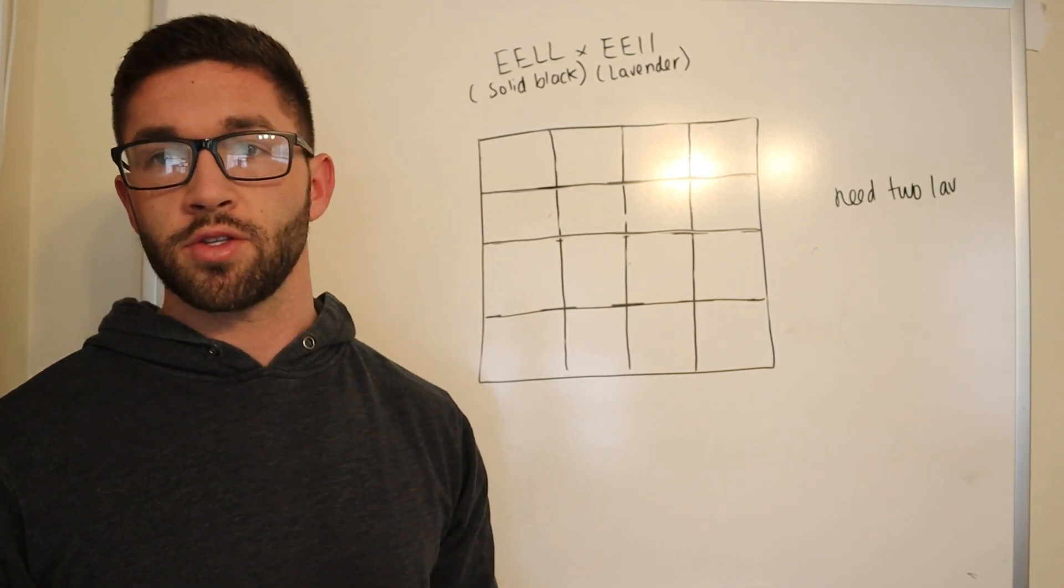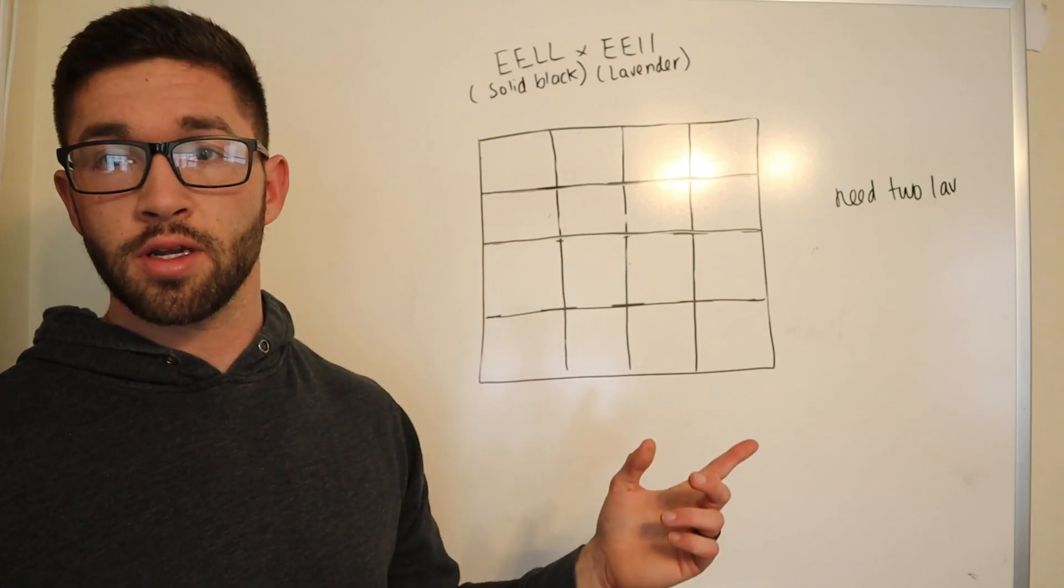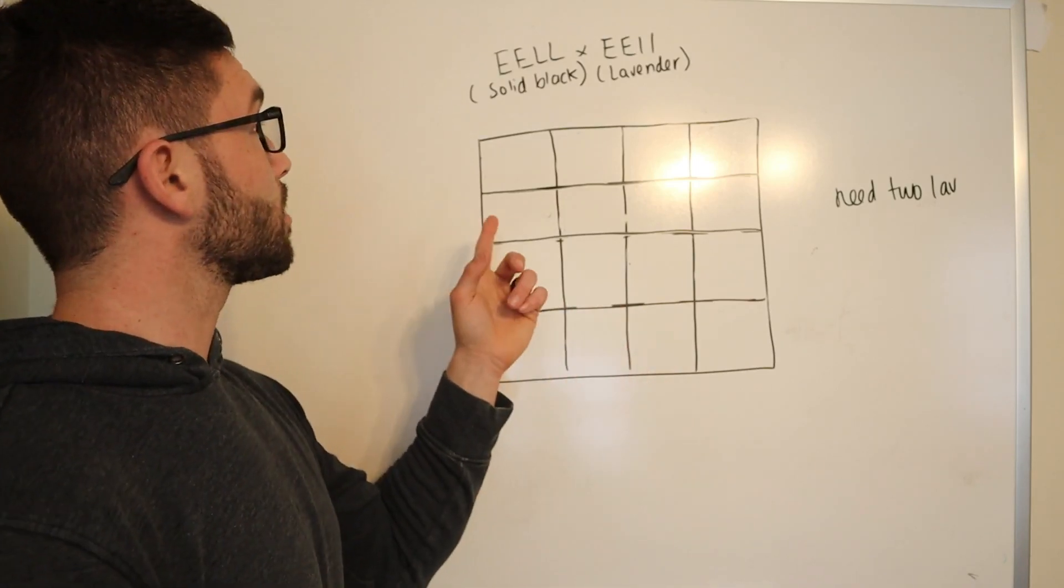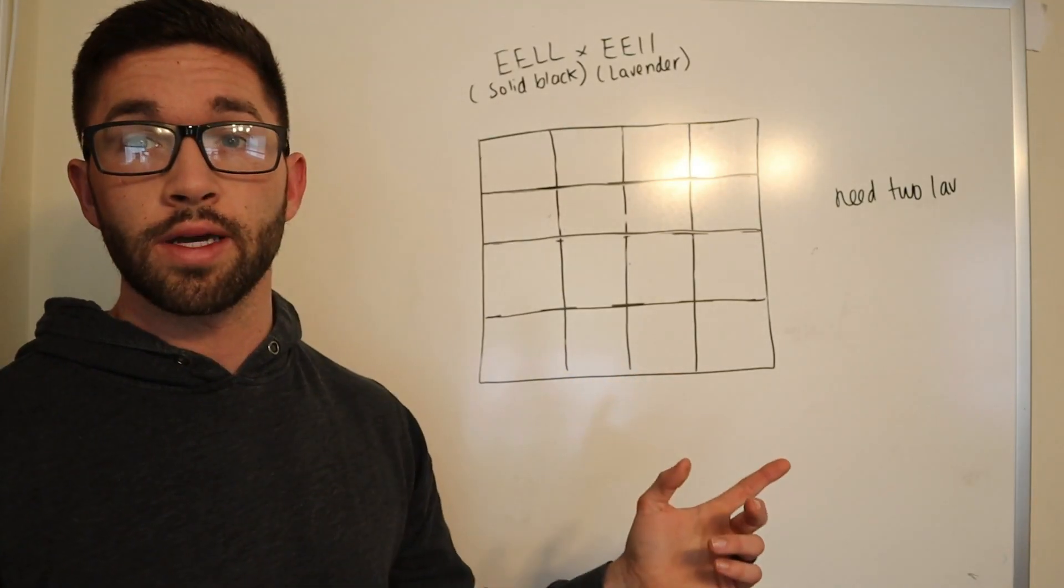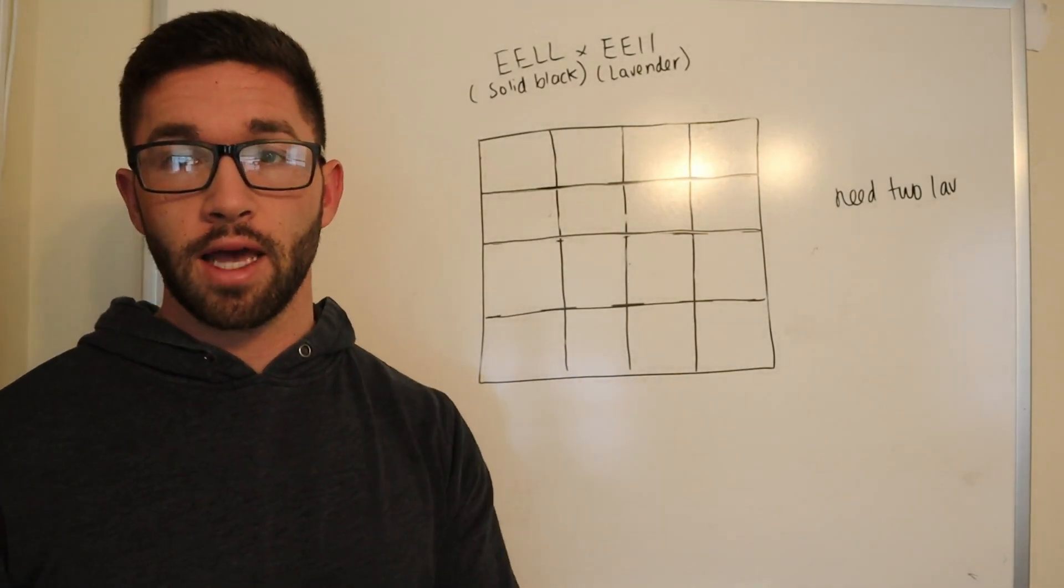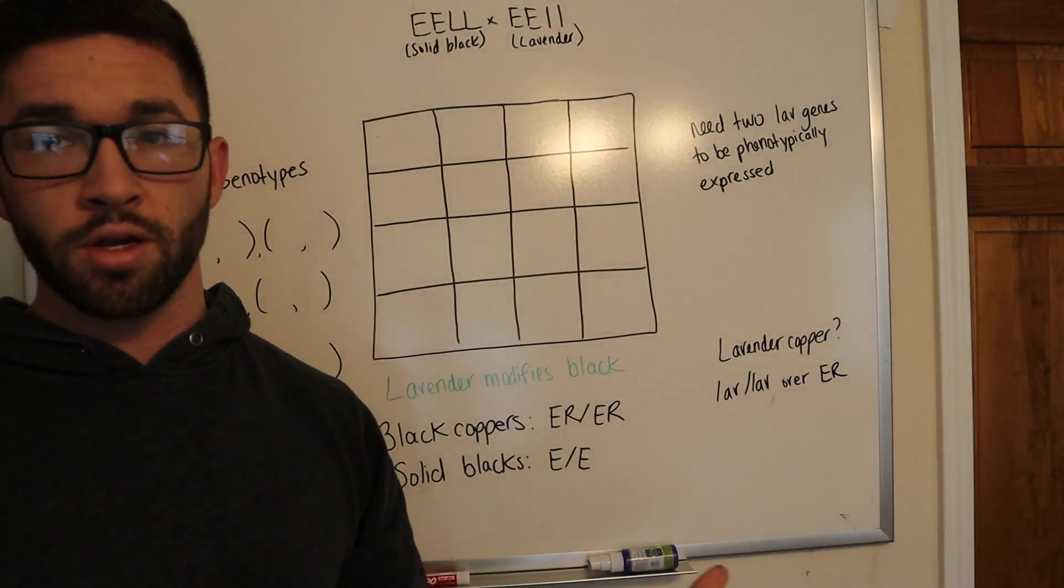Okay, so since I'm doing a 16 box Punnett Square today, I thought it would be useful to actually incorporate some poultry genotypes in here. So I did solid black and lavender. I used this Punnett Square when I was doing a breeding project to develop my lavender marins. You would use a Punnett Square like this to help you with your breeding goals.